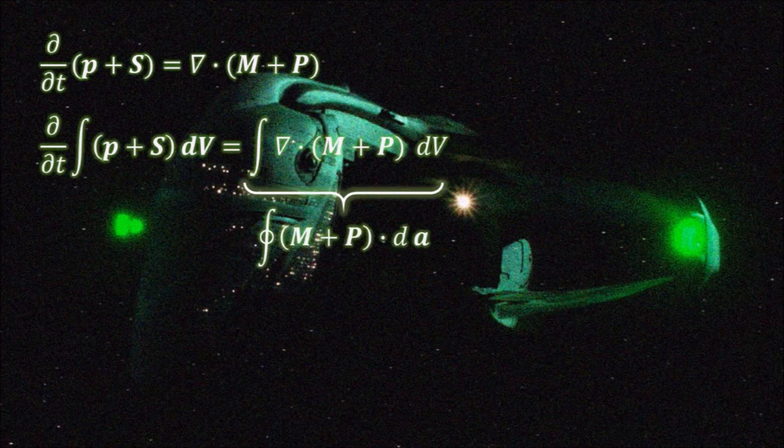This equation looks like a local conservation equation, but for what quantity? To get a clue, we can integrate both sides over some volume, and then use Gauss's theorem to write the right-hand side as a surface integral.